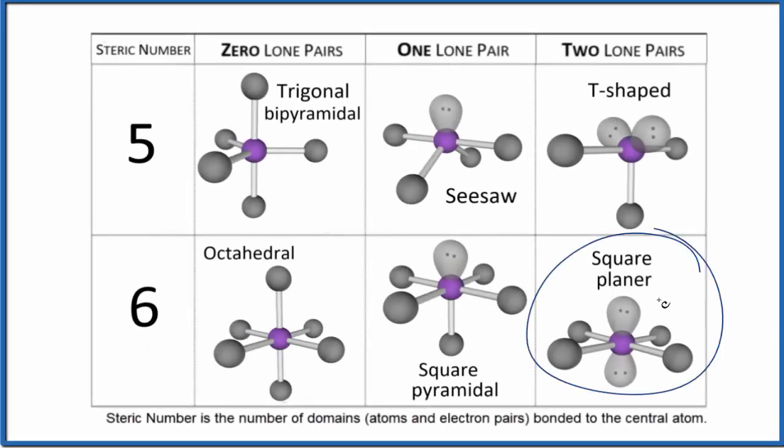Let's take a look at the square planar molecular geometry. So starting out we look at square planar. That means that we have a steric number of six, six things attached to that central atom.